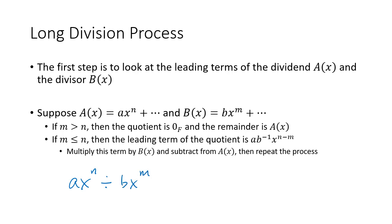We don't really have division directly, but we have multiplicative inverses. For the x part, x to the n divided by x to the m means we subtract those exponents, giving x to the n minus m. Then a divided by b is really just a times b inverse. That gives us the first term of our quotient.